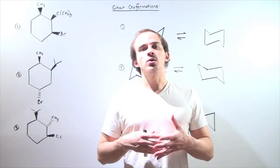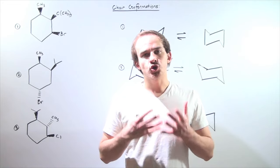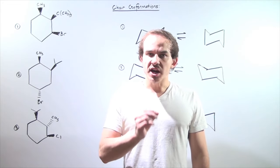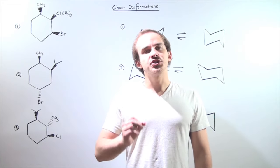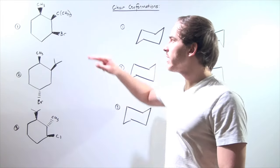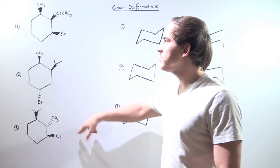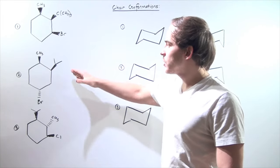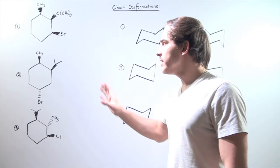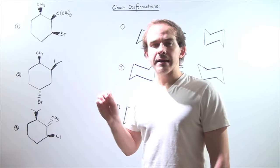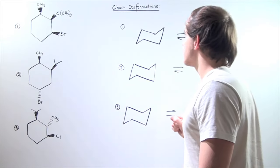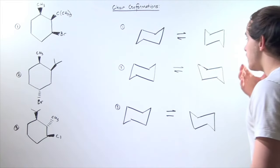In this lecture, we're going to practice drawing two chair conformations for cyclohexanes. Let's begin by looking at the following three examples of cyclohexane. In each case, our goal is to draw the two different chair conformations for each of these compounds.